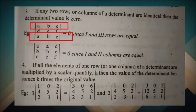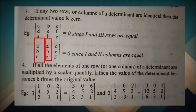Next example: if the columns are identical — if the first column elements are a, b, c and the second column elements are also a, b, c — then the determinant value is zero. That is the third property.